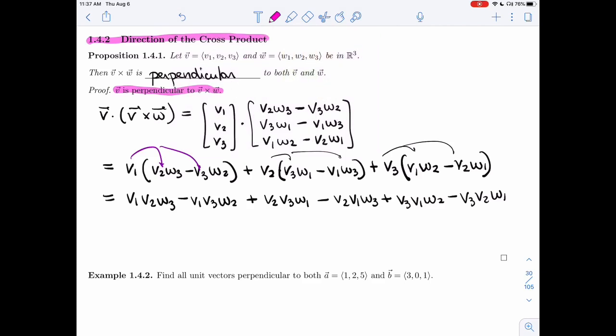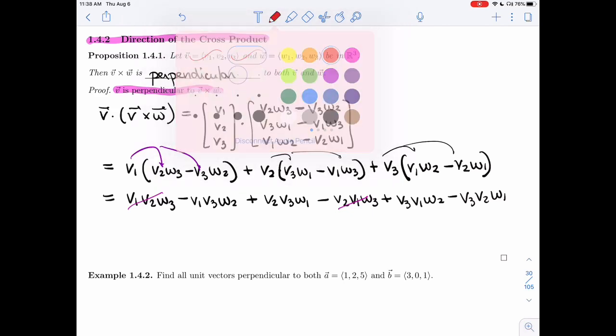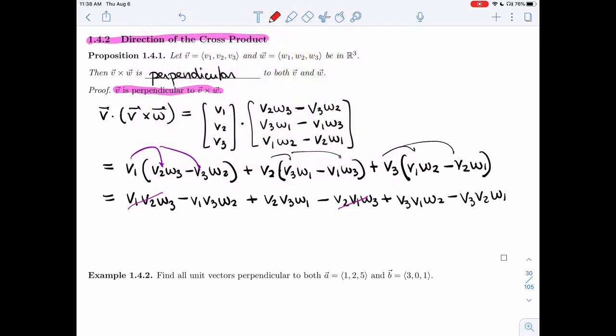V1 V2 W3, this term cancels with that one. V1 V3 W2, that one cancels with this. And finally, V2 V3, yeah, these cancel. Everything cancels, and I get just zero. And so those two vectors are indeed perpendicular.